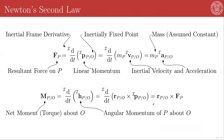We are finally ready to state Newton's second law in formal mathematical terms, using all of the vector algebra and calculus we have set up so far. Newton's second law tells us that the resultant force on particle P is a vector quantity equal to the derivative with respect to an inertial frame of the linear momentum of particle P with respect to a point O, which is a non-accelerating point in the inertial frame.